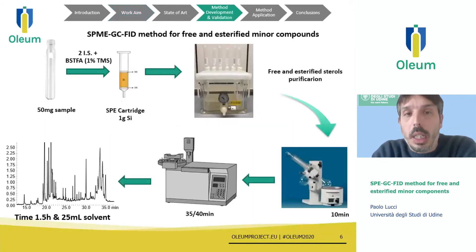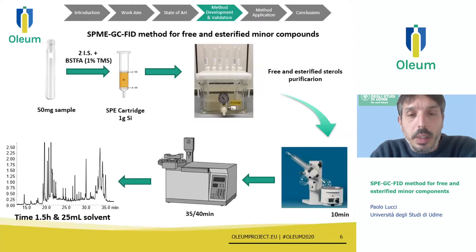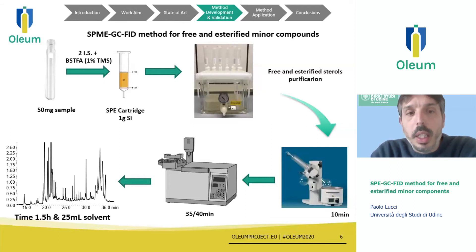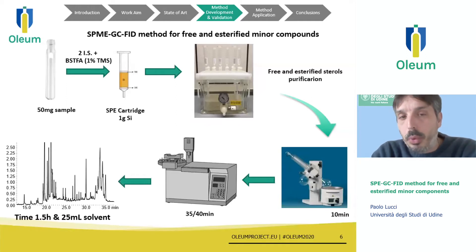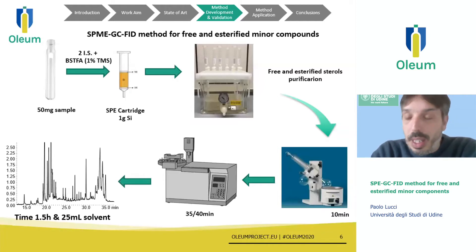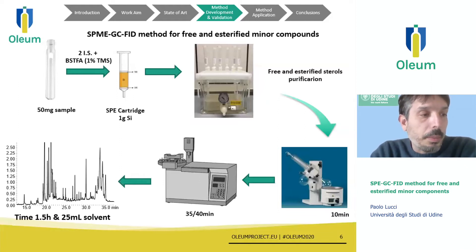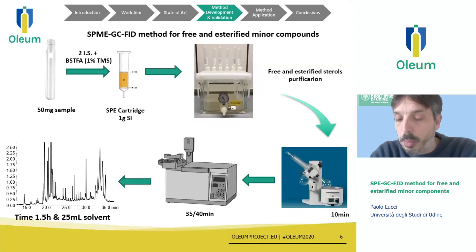So we tried to manage all these aspects and developed a method summarized in the slide. It is quite a simple method that starts with direct derivatization of the oil in order to make the polarity of the free compounds in our sample much closer to that of the esterified fraction. In this way, we are then able to purify both free and esterified minor compounds using a simple SPE glass cartridge packed with silica. Then both free and esterified compounds are analyzed by GC-FID using a cold-on-column injection mode.